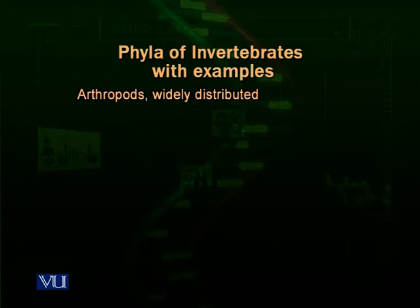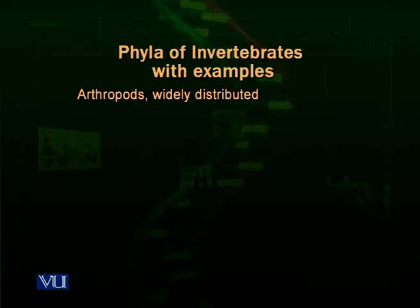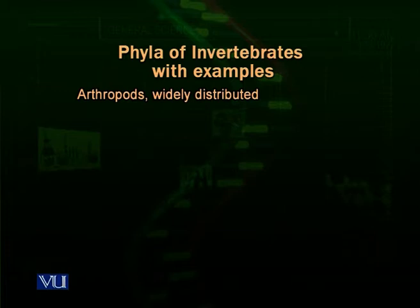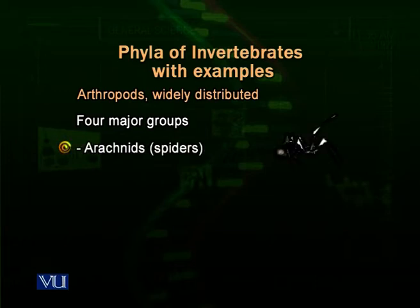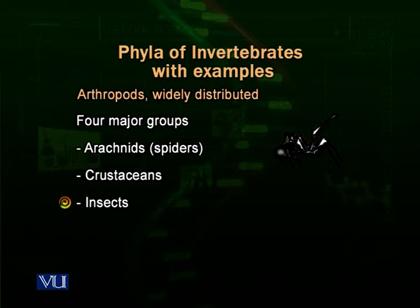The next phylum is arthropods. Arthropods are very widely distributed, and insects are one of the most widely distributed and diverse groups on earth — they have far more species than almost all other organisms. The phylum Arthropoda has four major groups: Arachnida, which includes spiders, ticks, and mites; Crustacea, which includes many zooplanktons; insects, which are present almost everywhere — in soil, water, and air; and millipedes and centipedes.